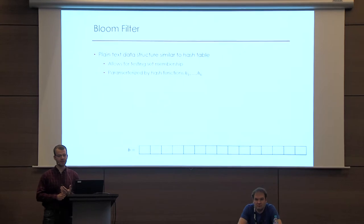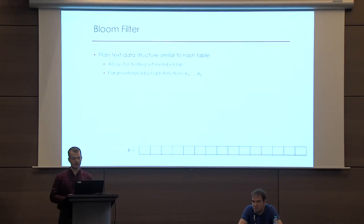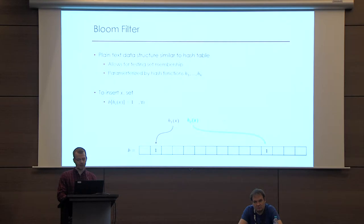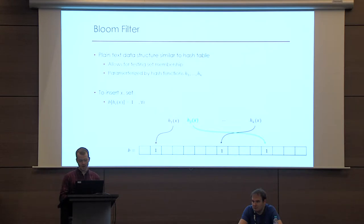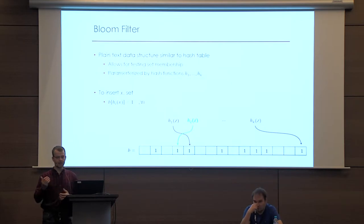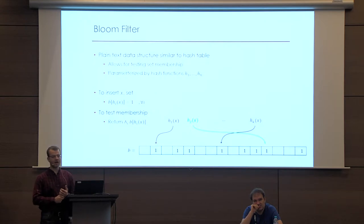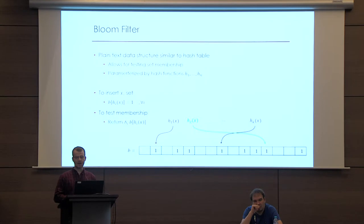Another one of our building blocks is known as a Bloom filter. This is a data structure similar to a hash table, except it only allows for testing of set membership — is an item in my set? It is parameterized by k hash functions h1 through hk, and a bit array denoted by b, which is initialized to all zeros. To insert an item into this Bloom filter, you simply set all the bit locations indexed by the hash functions to one, and you can repeat this for other items. To test set membership, we simply do the same thing again, and take the bitwise AND of all these, which reports whether an item is in the Bloom filter or not.